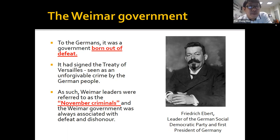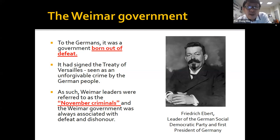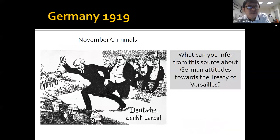Many people disliked this government because they thought it was born out of defeat. They were the ones who signed the Treaty of Versailles, which was terrible, as you've learned in Chapter 1. Many regarded them as criminals because Germany was fighting a war and they were the ones who basically signed the surrender. They were deemed as November criminals by some.